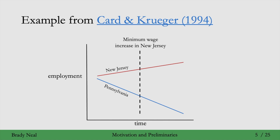We see that employment in the control group in Pennsylvania is just going down over time in this graph. That shouldn't really have anything to do with the treatment, because it's the control group — they're not getting the treatment. And then we see that in the treatment group, we see a different trend. And we're going to use these differences in these trends to get our causal effect estimate.